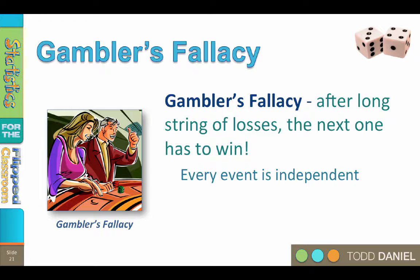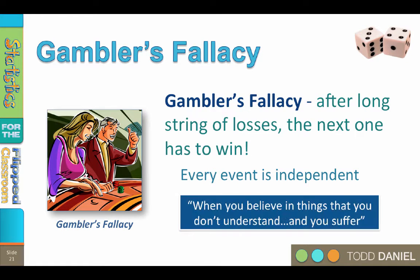The gambler's fallacy is a failure to grasp that all of these events — every roll of the dice, every turn of the cards, every pull of the slot machine handle — are independent of each other, so their occurrence does not influence the probability of the next roll. Probability only works in the long run. The best definition of superstition comes from musician Stevie Wonder: when you believe in things that you don't understand and you suffer. Over the long term, there will be more wins than losses for the house. You want to make money at a casino? Own a casino.